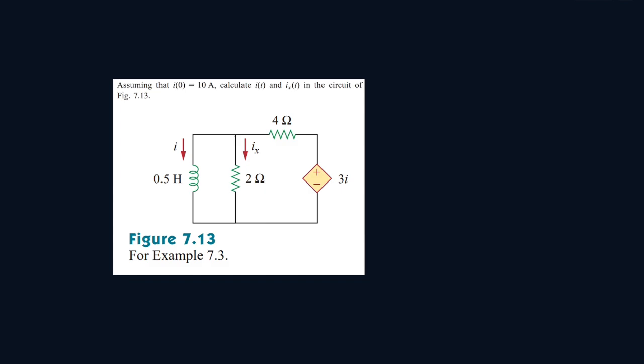Alright, so for the following circuit, we have to find the formula for I(t) and Ix(t), and we're given that at T equals zero, I here is equal to 10 amps.